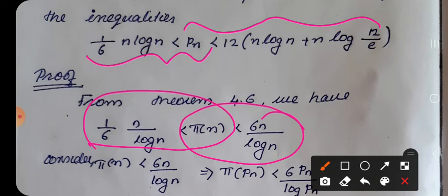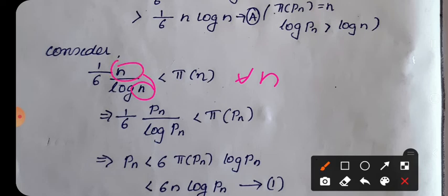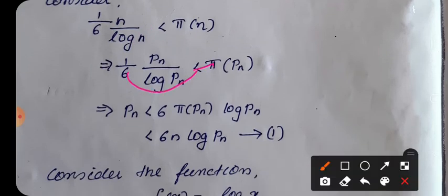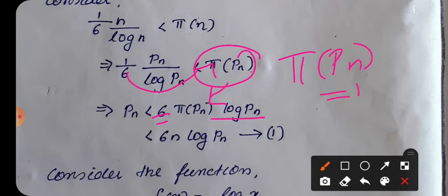Now we will prove the upper bound. The first part of Theorem 4.6, 1/6 · n/log(n) < π(n), is true for every n, and in particular for n = pn. Replacing n by pn: 1/6 · pn/log(pn) < π(pn) = n. Rearranging: pn < 6n·log(pn). This is our key equation for the upper bound.